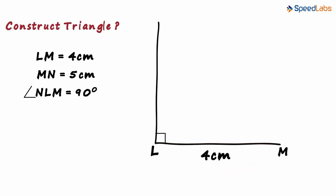Now be careful. We have been given the length of MN. To get MN, we keep the compass at point M and mark an arc of 5 centimetres here. This will be MN.